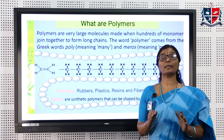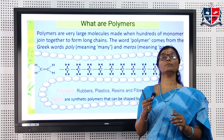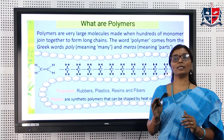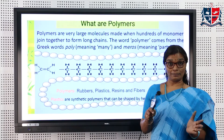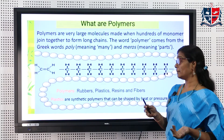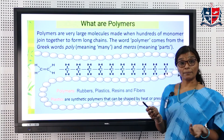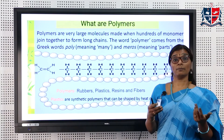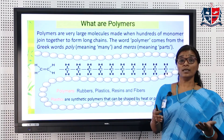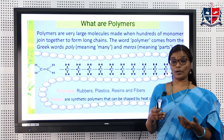So, polymers are macromolecules made up of small units called monomers, and the conversion of monomers to polymers is called polymerization. We have several polymers: natural rubber, plastics, resins, and lots of fibers — nylons, polyesters, and different types of fibers.